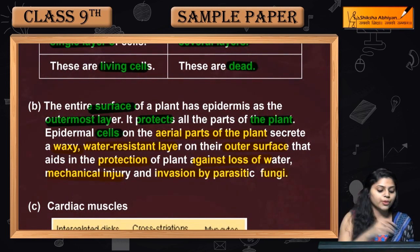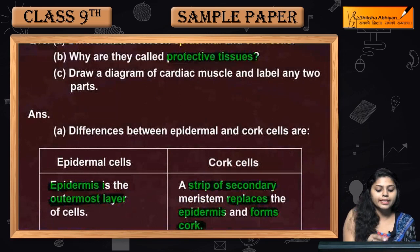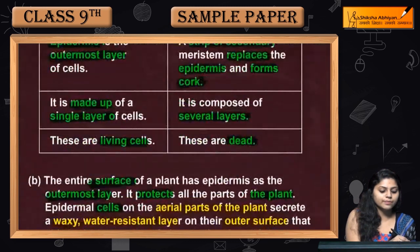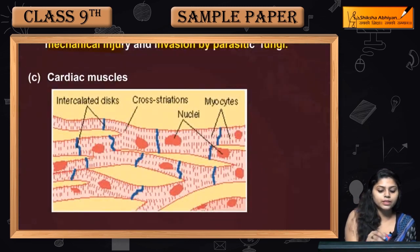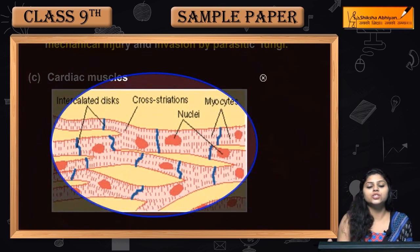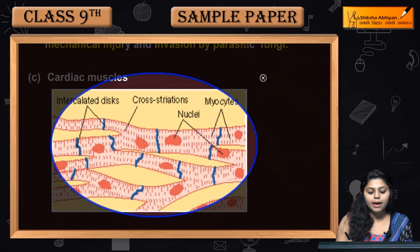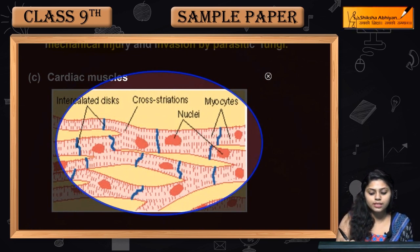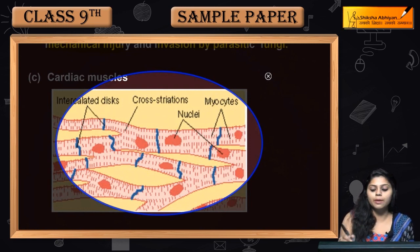Next question: draw a diagram of cardiac muscle and label any two parts. Cardiac muscle is branched, has striations, nuclei are present, myocytes are present, and intercalated discs are present. So this is the diagram of cardiac muscle.